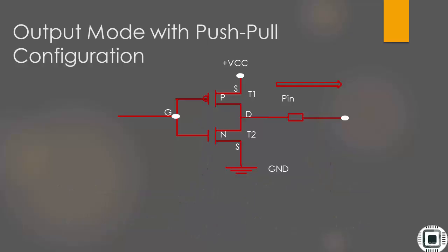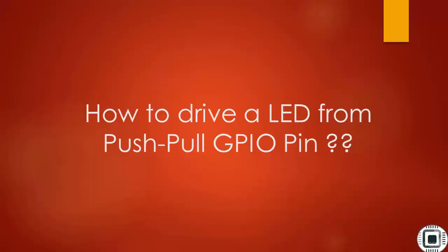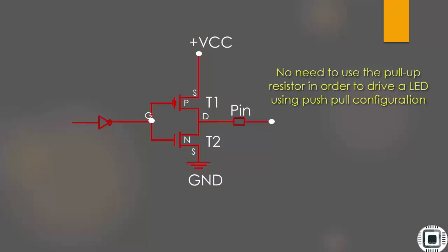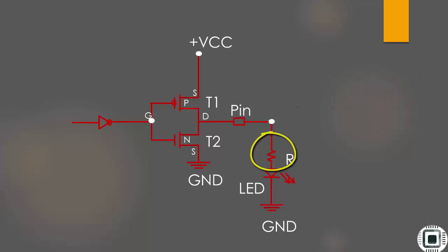Now let's see how you can drive an LED from a push-pull output configuration. The first thing you should notice here is that there is no pull-up resistor. The LED is simply connected to the pin via the current limiting resistor. This resistor is just used to limit the current which flows across this LED so that you don't burn out the LED.